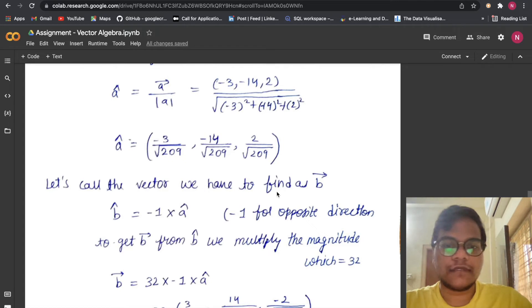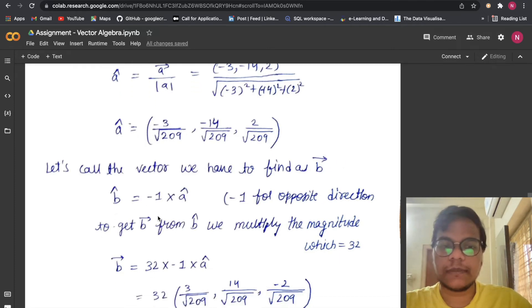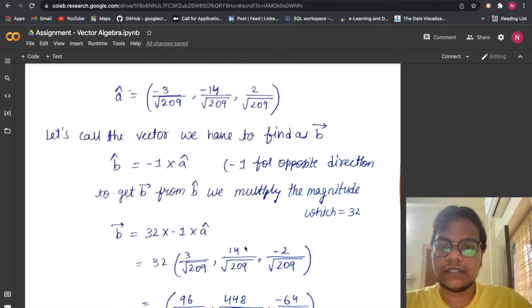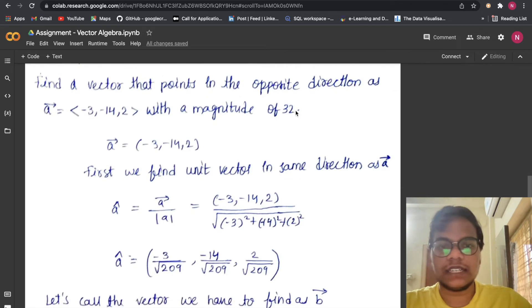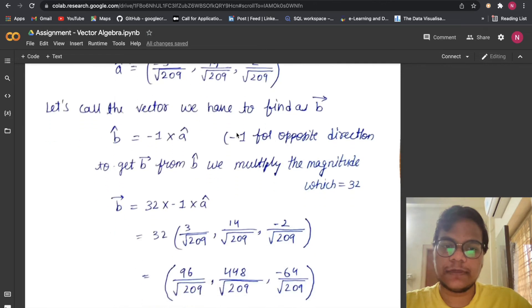Let's call the vector we have to find as b̄. So b̂ = -1 × â in the opposite direction, that's why we're multiplying with -1. And we are also multiplying with the magnitude, that is 32. Vector means it has direction as well as magnitude, right? So the magnitude is already given in the question and the direction is opposite direction, that's why we're multiplying with -1. So if we solve this, we got these values.